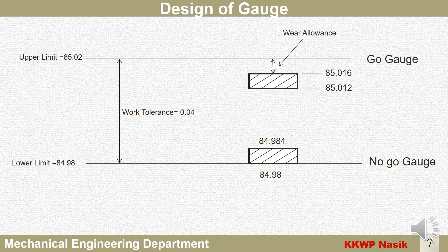The image shows the upper and lower limits within the work tolerance of the shaft, which is 0.04 mm. The upper limit is 85.02 mm and the lower limit is 84.98 mm, as calculated in the previous steps for the shaft dimension 85 ± 0.02 mm.